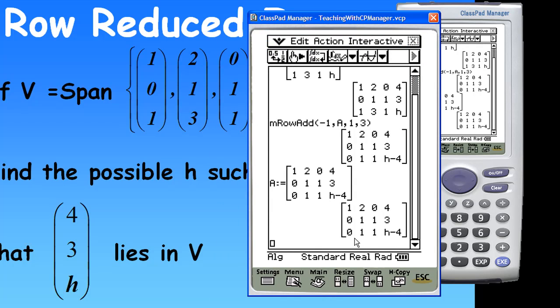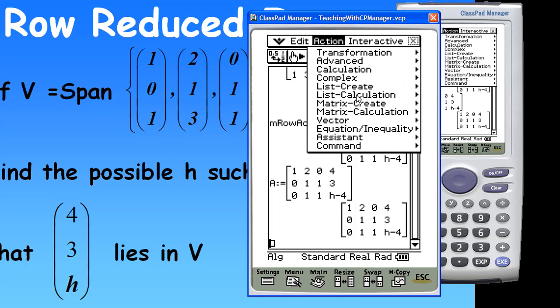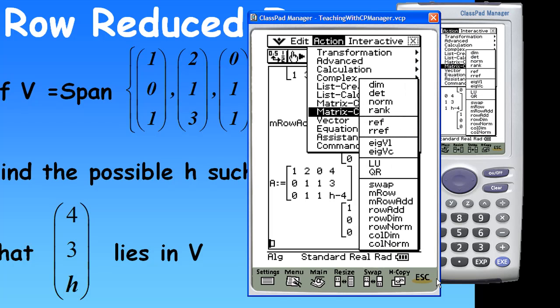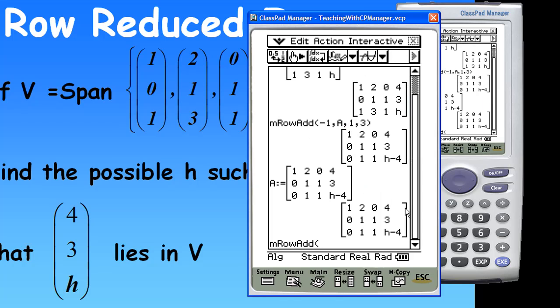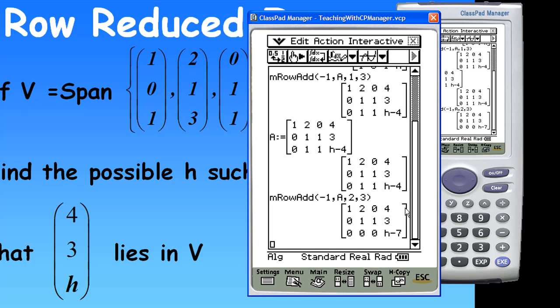So, I want to do some row operation again. Action, matrix calculation, mRowAdd. So, this time, I'm going to use the second row times minus 1, add to the third row. So, factor is minus 1 times A on the matrix. Multiply to the second row, add to the third row. Then, and third.